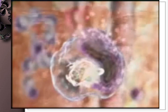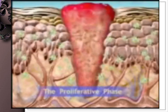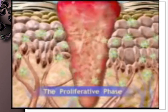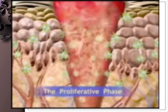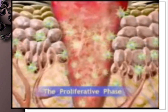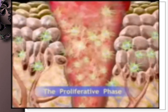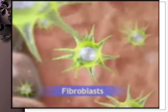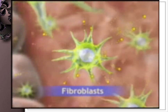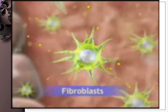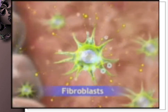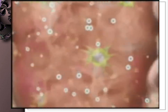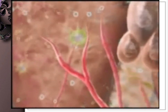The arrival of fibroblasts marks the beginning of the second phase of wound healing: the proliferative phase. During this phase, the focus moves to building new tissue to fill the wound space. Fibroblasts are connective tissue cells that synthesize and secrete collagen. They also secrete growth factors that induce the growth of blood vessels through a process called angiogenesis, while promoting endothelial cell proliferation and migration.